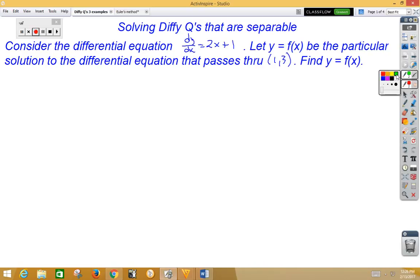Well, this is a first-order separable differential equation. The first thing we want to do is get the y's on one side and the x's on the other. Let's kill the fraction by multiplying the dx to the right. If we do that, we get dy is equal to 2x plus 1 dx. That's called separation.